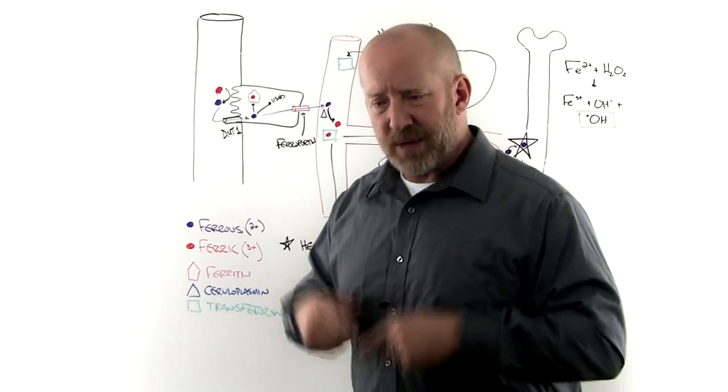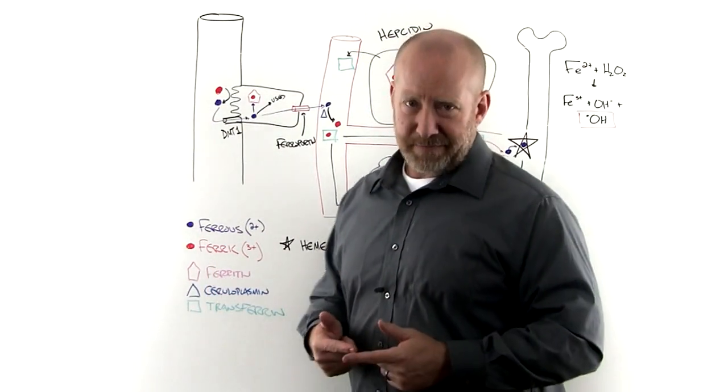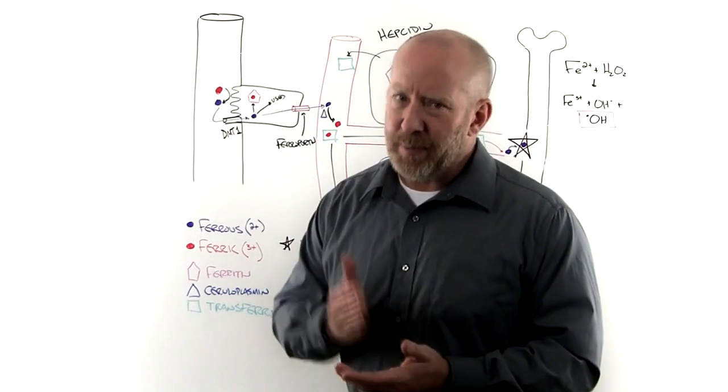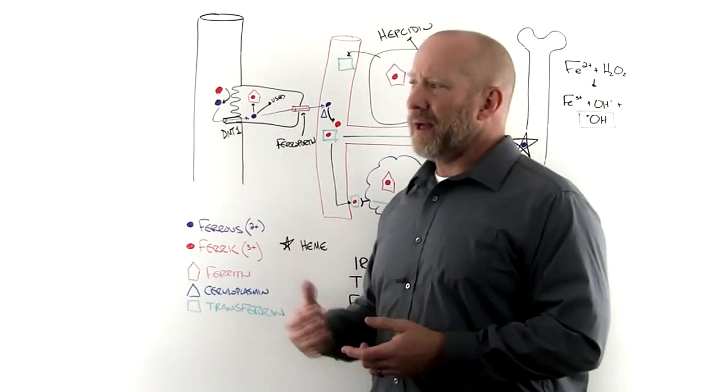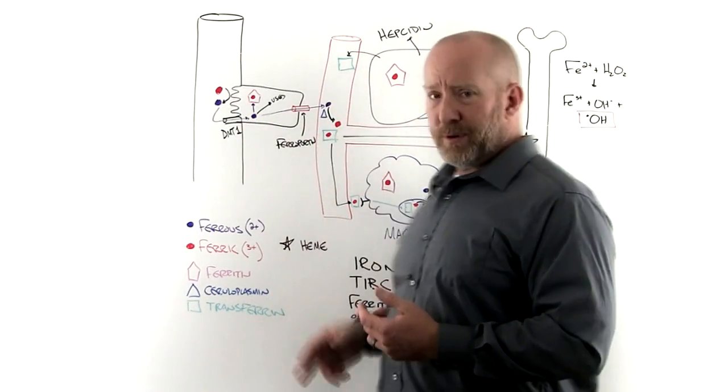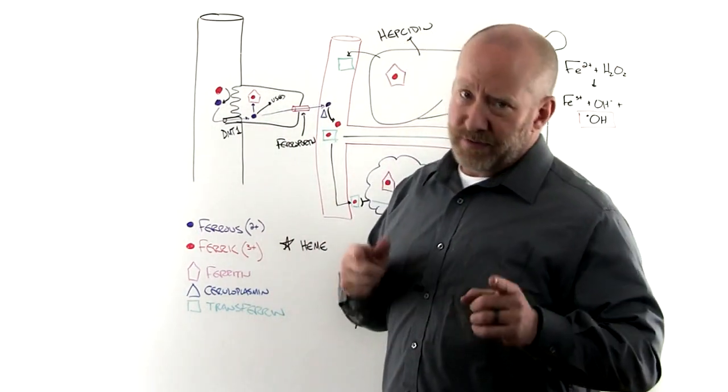Here's one of the ways in which if there's a copper deficiency, you may not have enough ceruloplasmin. If you don't have enough ceruloplasmin, you can't convert the ferrous to ferric form of iron, and the body is looking for that form.